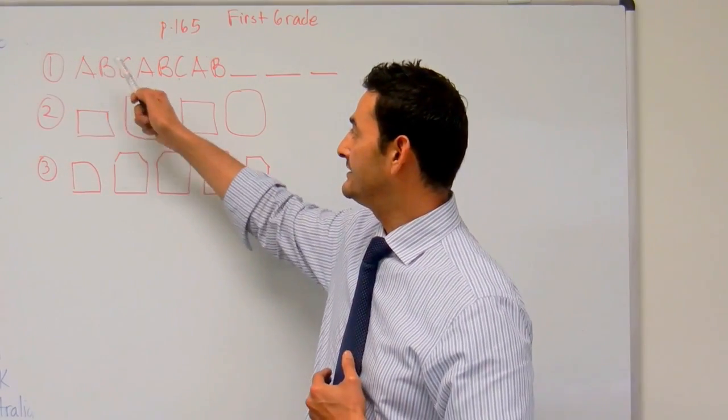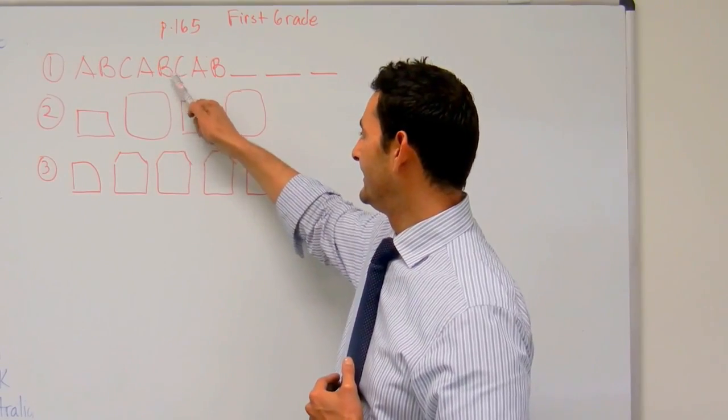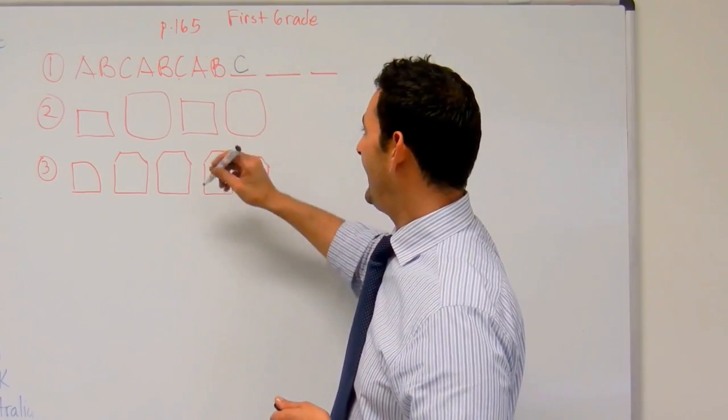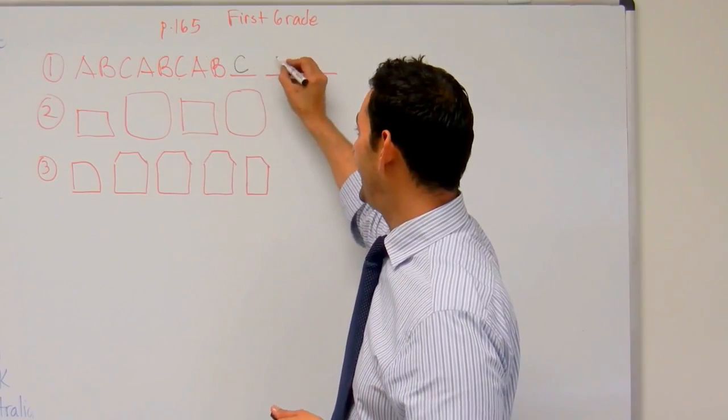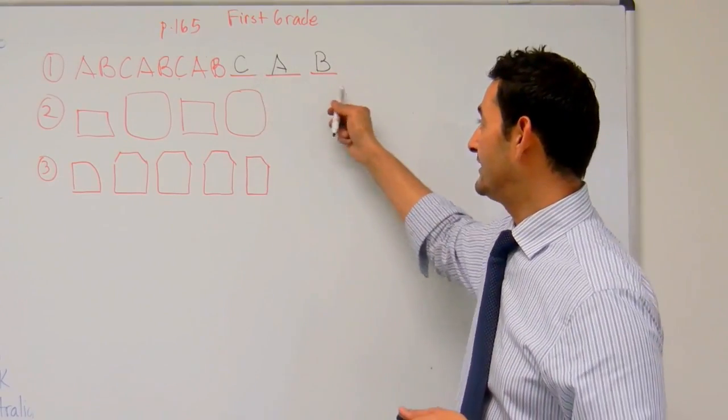A, B, C. A, B, C. A, B. What goes there? C. And then after the C, it's going to be again, A, B, C. So we're going to find out the next three.